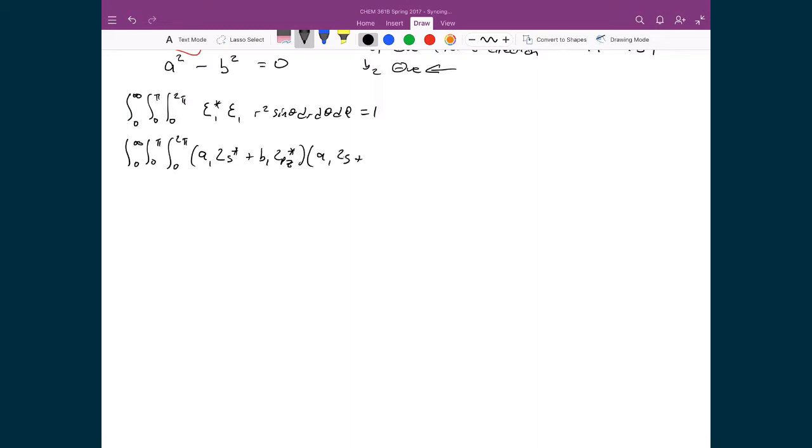A1 times 2S, plus B1 times 2P Z, R squared, sine theta, dr, d theta, d phi, and it's equal to 1.